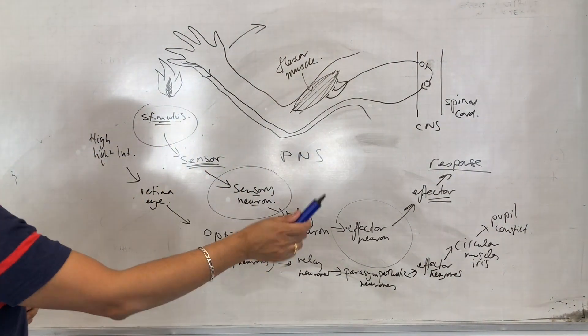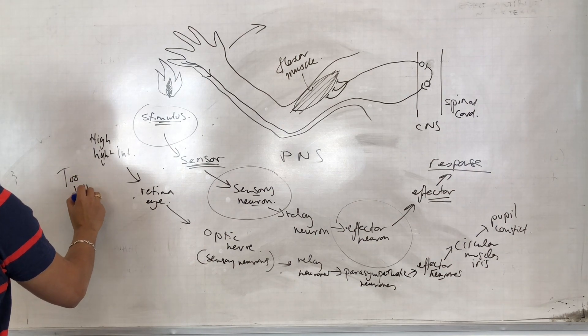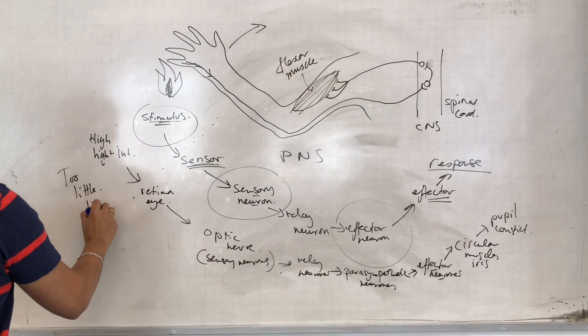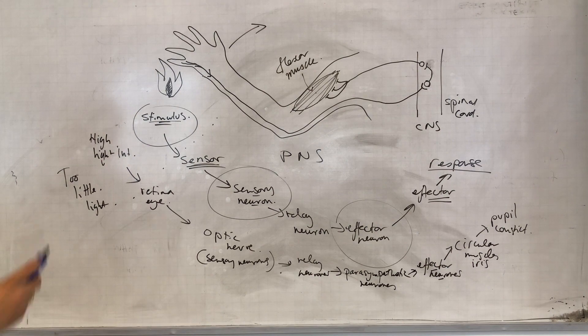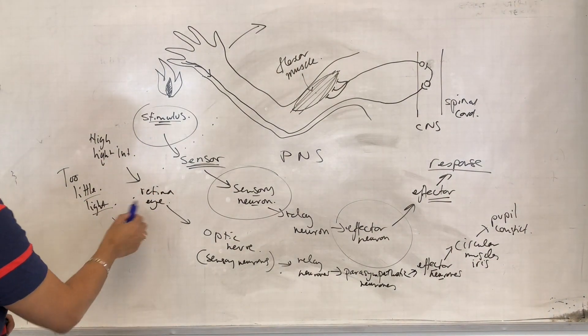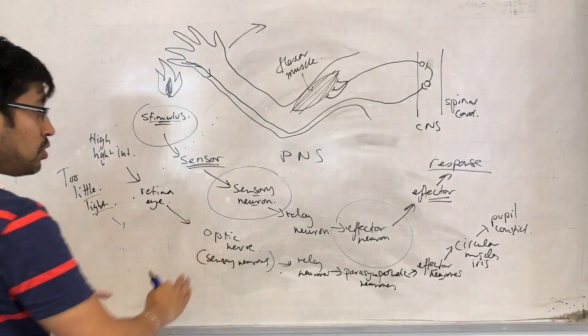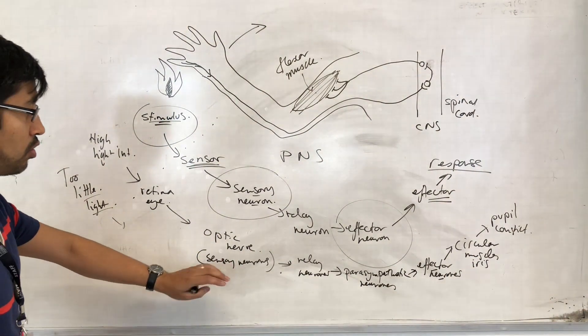Let's do the same thing, but with too little light. So if there's too little light, then again, that's going to be detected by the retina. We're going to have very few impulses moving down the optic nerve,